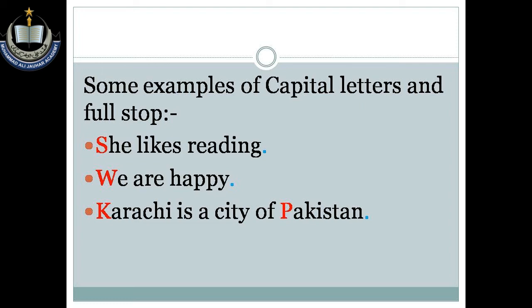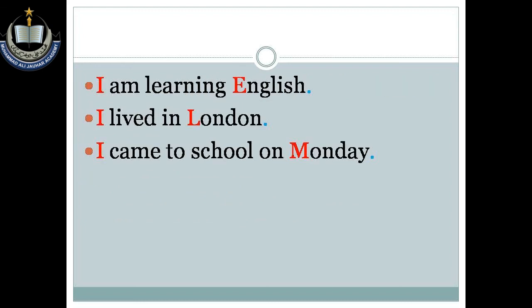'We are happy.' At the beginning of a sentence, you start with a capital letter and end it with a full stop. 'Karachi is a city of Pakistan.' Here you will also use a capital letter at the beginning of the special nouns Karachi and Pakistan.